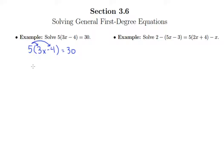5 times 3x is of course 15x. 5 times negative 4 is negative 20. So this is minus 20 equals 30.